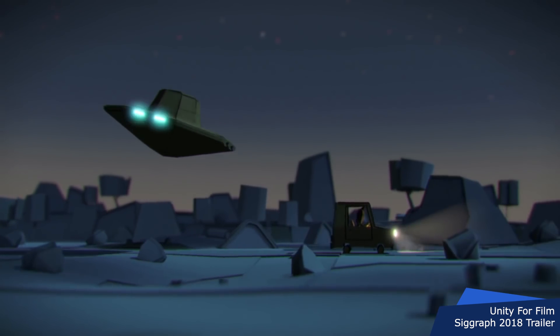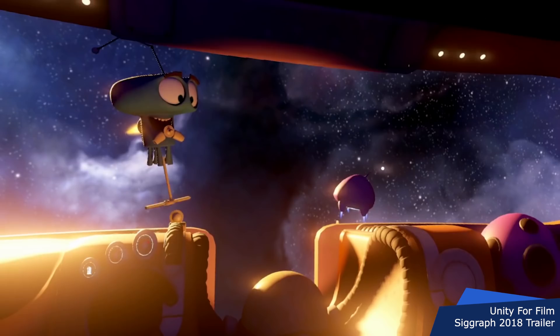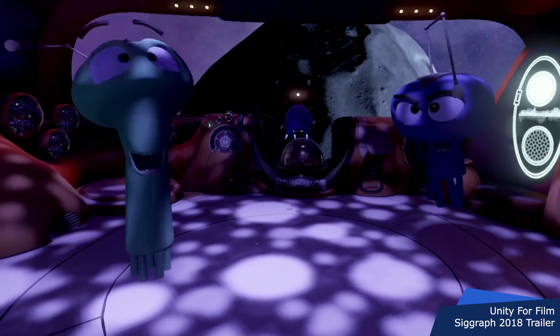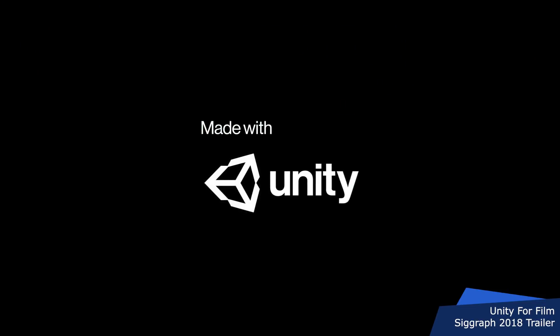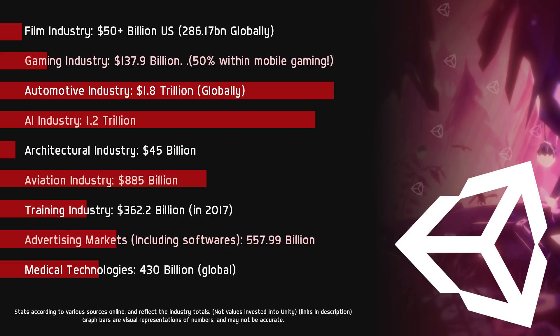Unity today is going far beyond gaming with big companies like Disney, Lexus, HTC, Uber, Tesla, Coca-Cola, AT&T, and so many more taking advantage of the real-time capabilities that Unity provides. With becoming a Unity developer, you are no longer limited to just the $120 billion gaming industry — you're now inviting yourself to opportunities spanning across several large multi-billion dollar industries. Here we have a brief graph taking a look at the numbers in these massive industries that Unity is now a part of, and it's no wonder Unity is the number one choice amongst developers looking for real-time solutions.